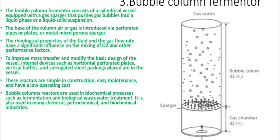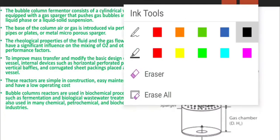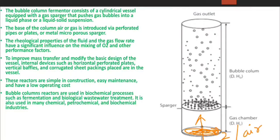The third type of bioreactor is the bubble column fermenter. In the bubble column reactor, oxygen or sterilized air is introduced from the bottom through perforated pipes or plates acting as spargers. This introduction of air from the bottom helps with aeration and mixing inside the fermenter.